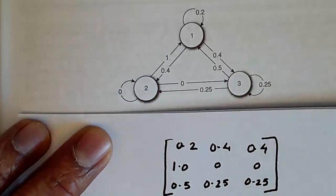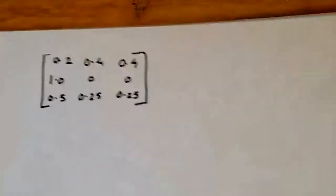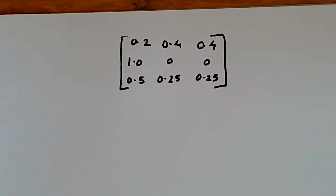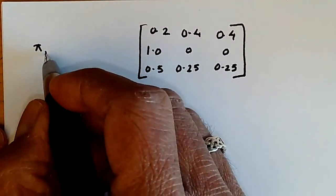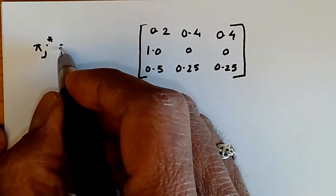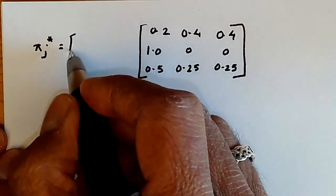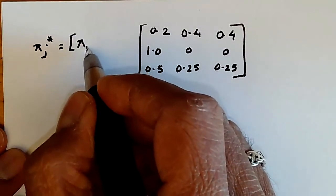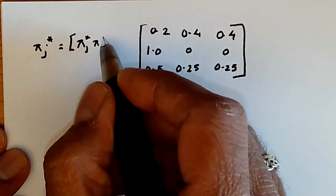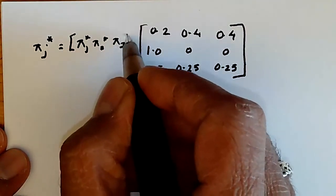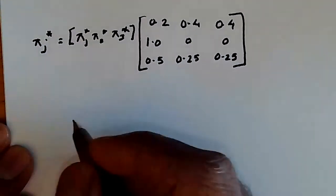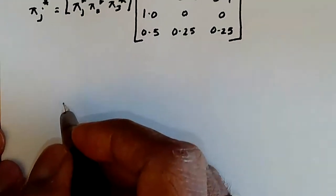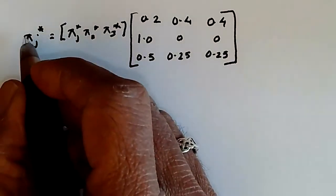So to solve this system, what we need to do is simply say that Pi J star is going to be given by Pi 1 star, Pi 2 star, Pi 3 star over here. And so the system of equations just becomes like this. This is a vector, of course.